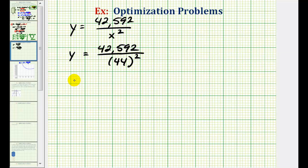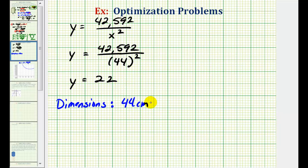Y is equal to 42,592 divided by x squared when x is 44. We already found this value, y is equal to 22. So to answer the question, the dimensions of the box that would minimize the surface area with a volume of 42,592 cubic centimeters would be 44 centimeters by 44 centimeters by 22 centimeters.